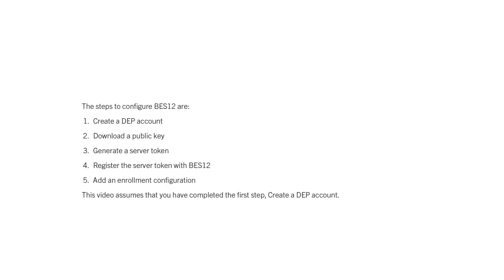The steps to configure BES12 are: create a DEP account, download a public key, generate a server token, register the server token with BES12, and add an enrollment configuration. This video assumes that you have already completed the first step: create a DEP account.